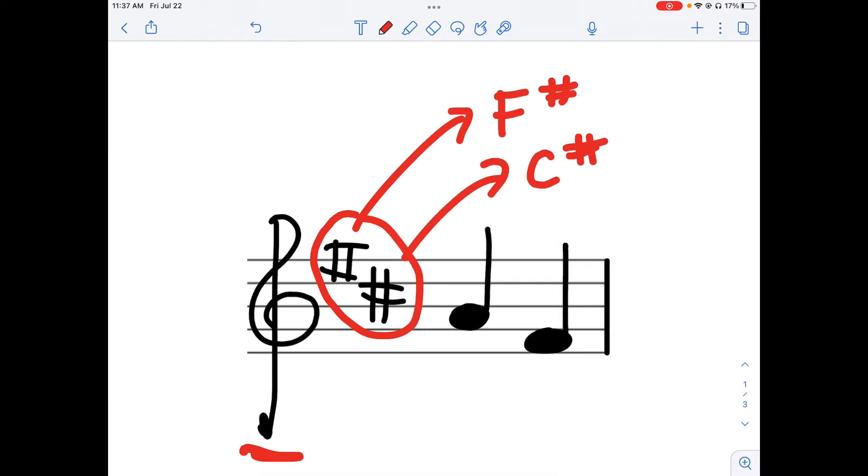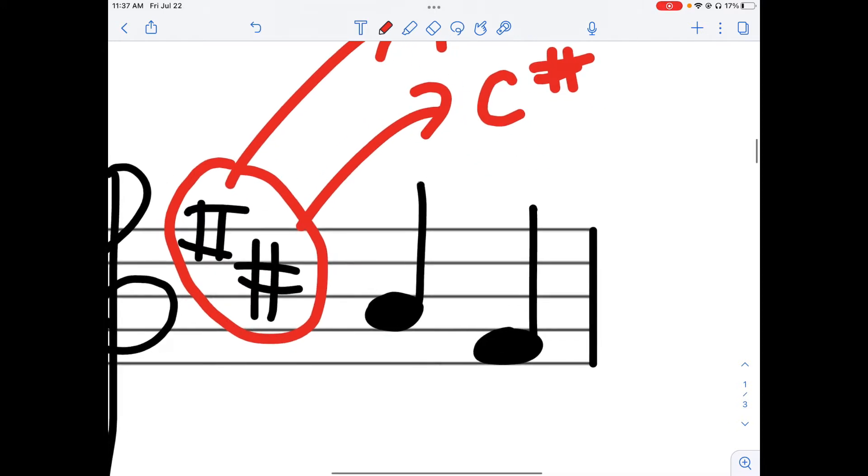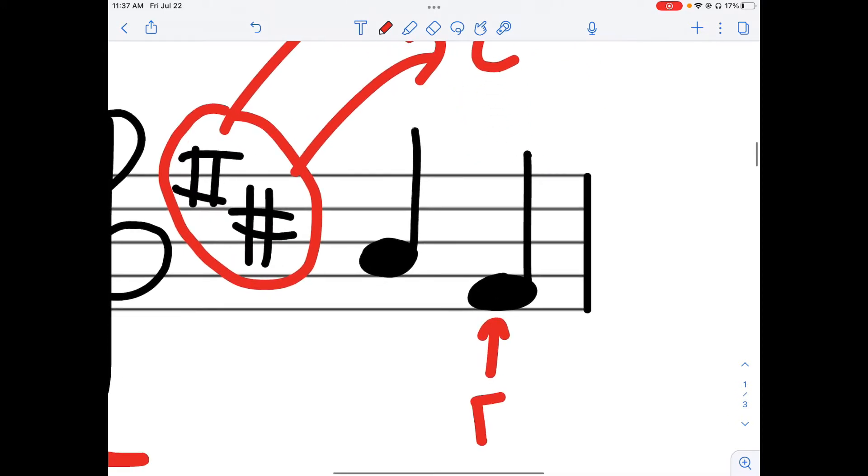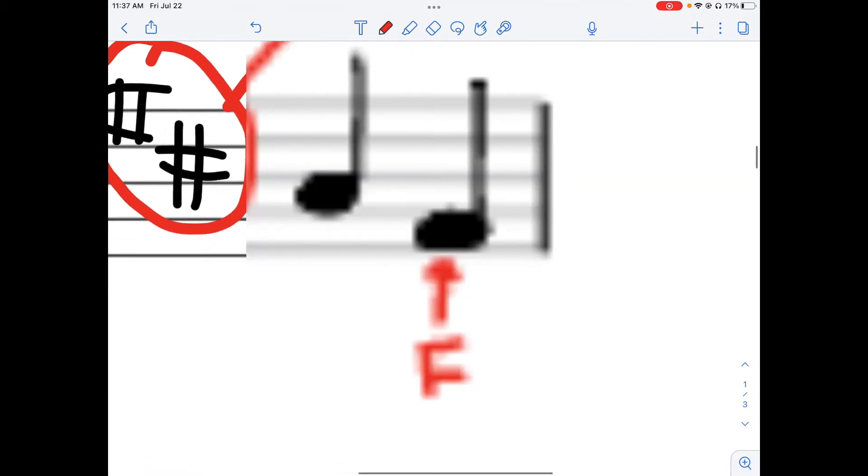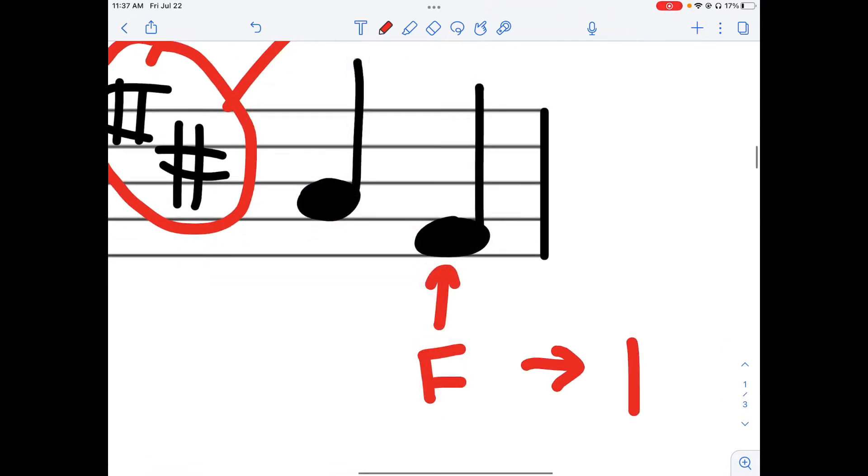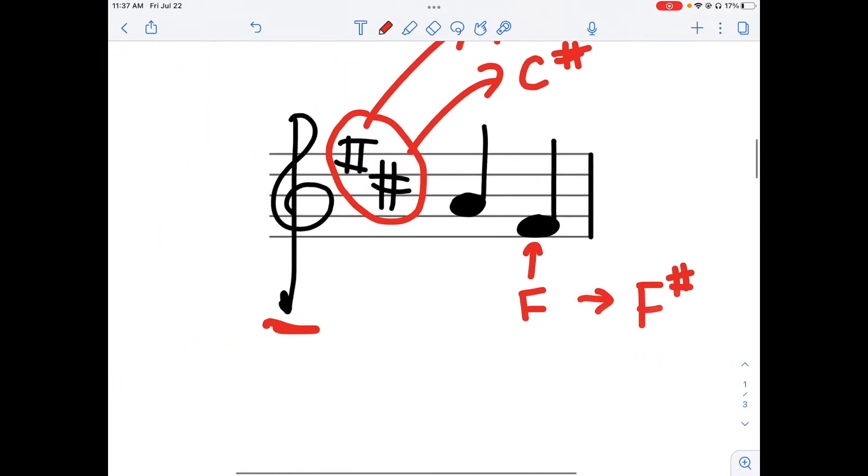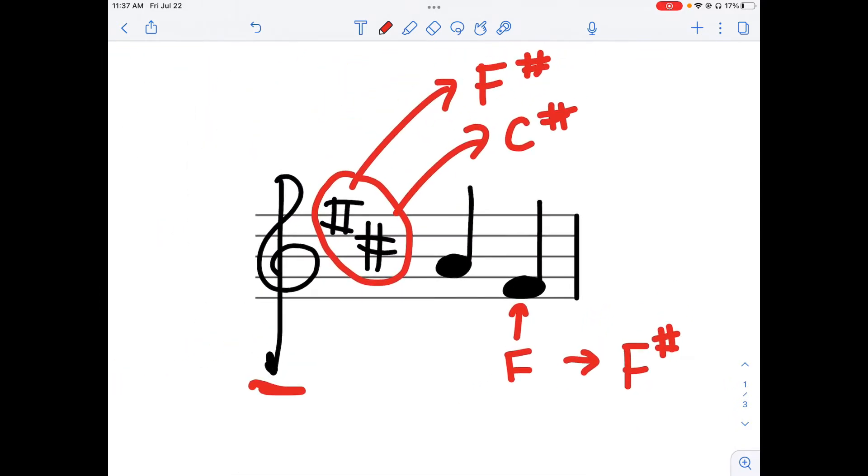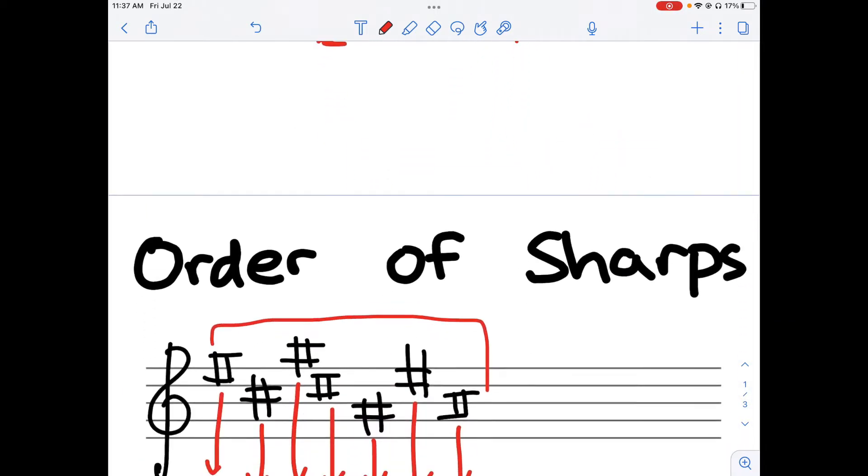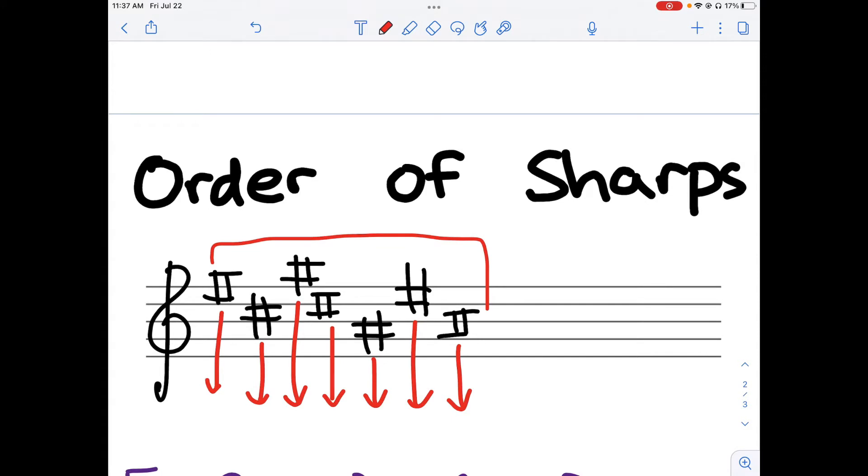So what does this mean? That means in this specific key, if you see an F—for example, this is an F—you wouldn't play or sing F, you would actually play or sing F sharp because that's what's in the key signature. Similarly, if we had a C, then you would need to play C sharp instead of just the C.